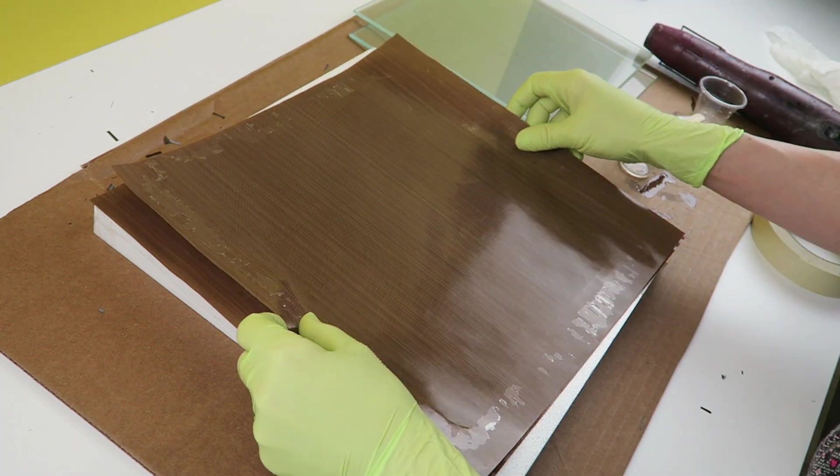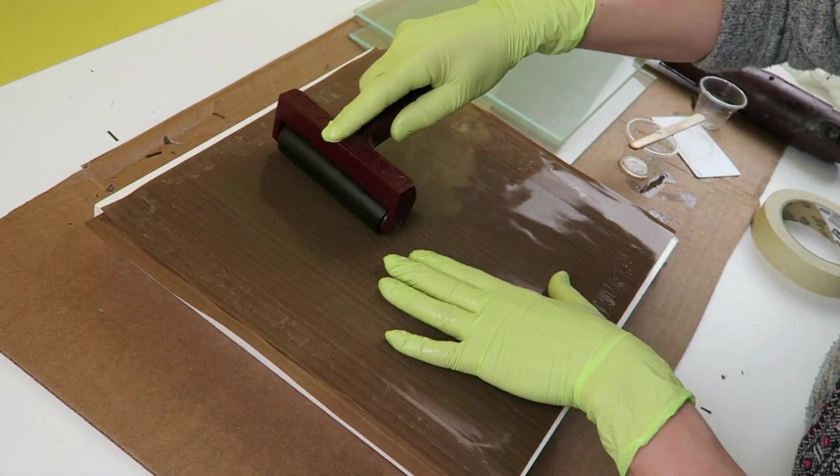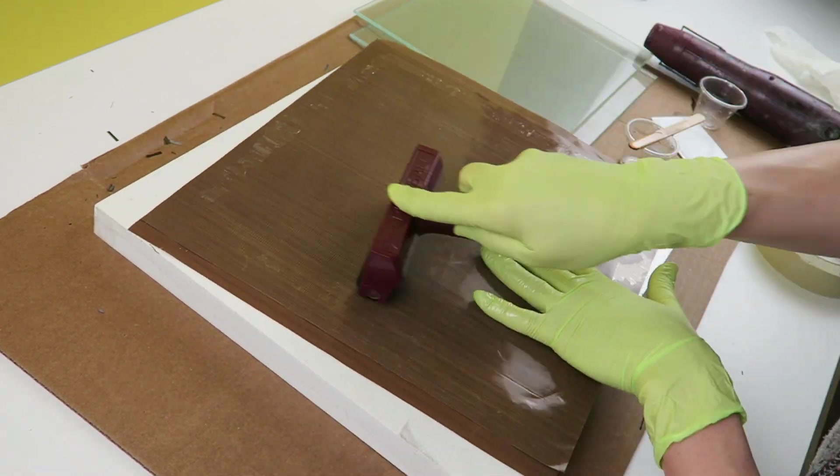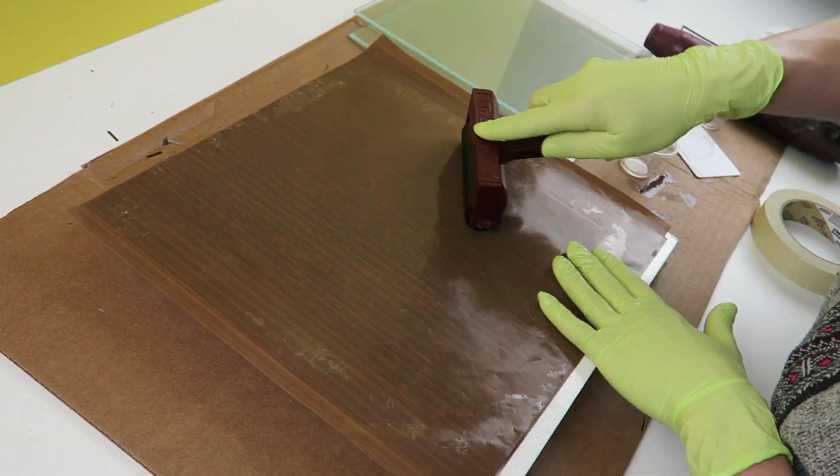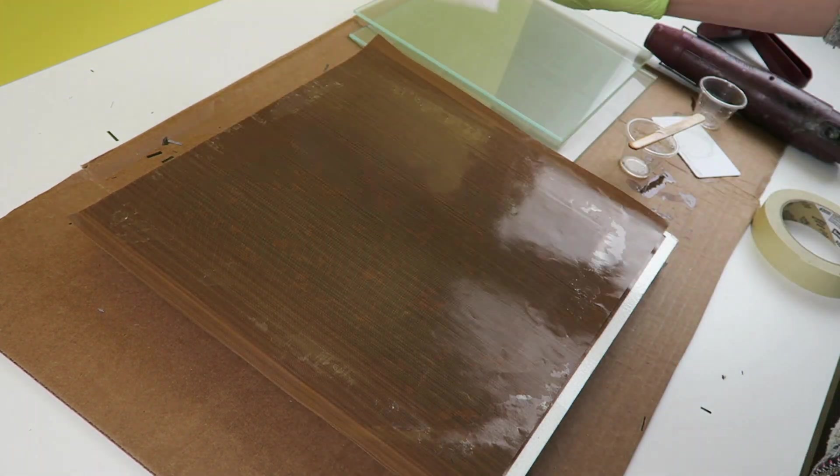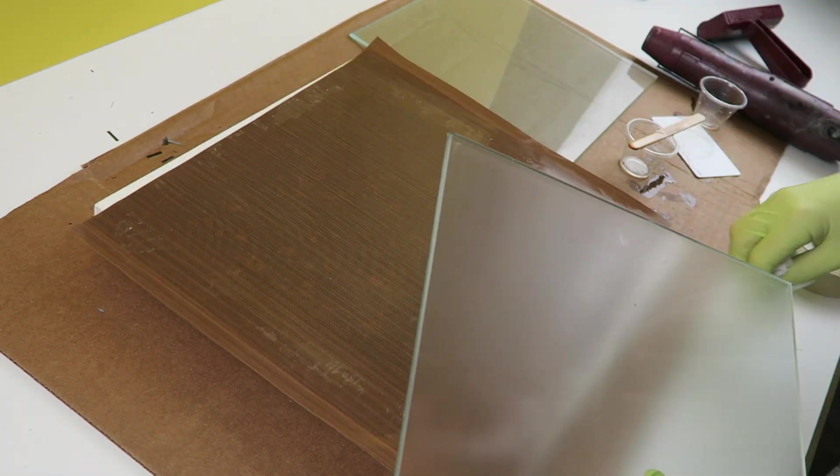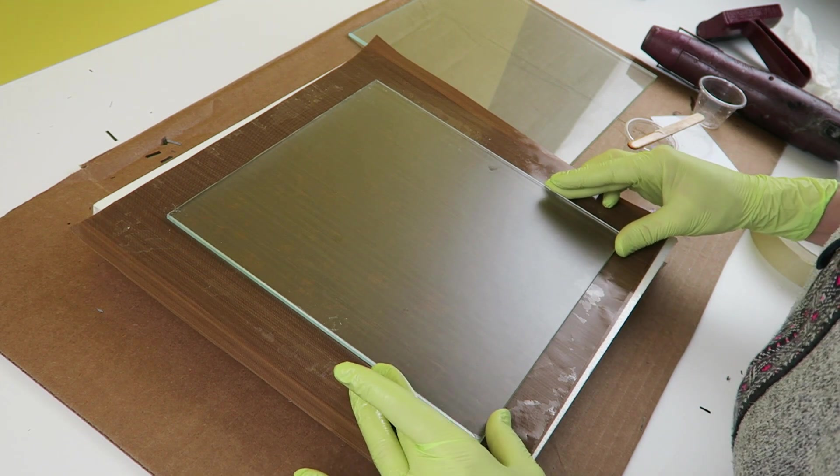Place the second sheet of peel-ply and use a rubber roller to remove any remaining trapped air. Dust particles trapped between the glass and peel-ply will leave a noticeable dimple in the finished veneer sheet, so make sure to clean thoroughly before aligning and taping the glass to the peel-ply.